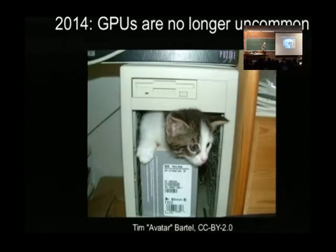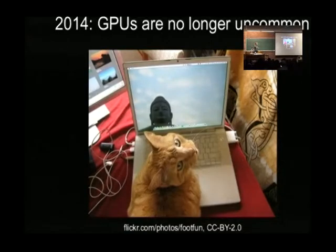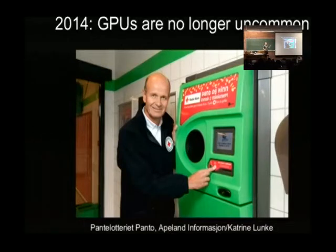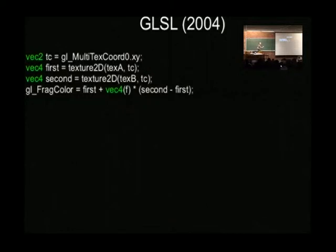Fast forward to 2014 and GPUs. You cannot really buy a desktop machine anymore without a GPU. And if you're lucky, you get a cat. You cannot buy a laptop anymore without having a GPU — and maybe a cat. You can't buy a cell phone without a reasonably powerful GPU. This is a bottle deposit machine — it has a GPU. So they are no longer uncommon, and we should not anymore assume the user does not have a GPU.